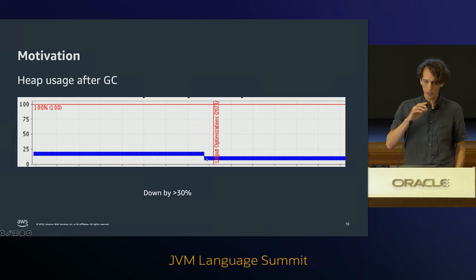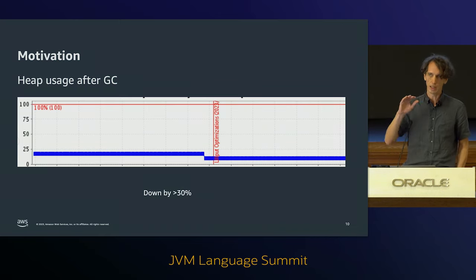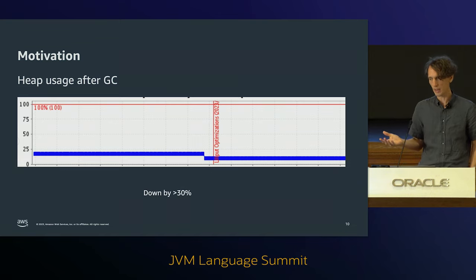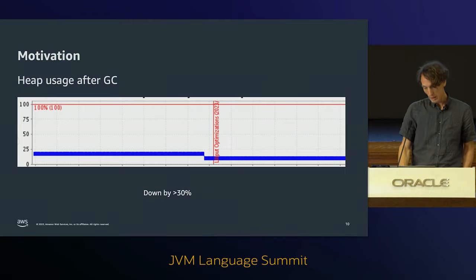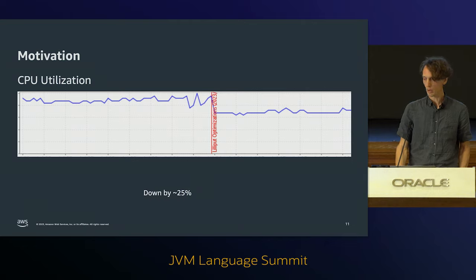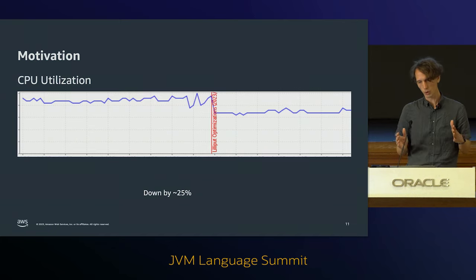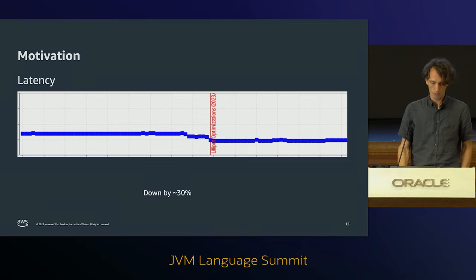This is heap usage after GC. It doesn't show the typical sawtooth pattern here, but this also has the effect that the slope of the sawtooth is a bit flatter than before, implying that the frequency of GCs is reduced - the interval between GCs is much longer - which means we're saving a lot of CPU utilization. CPU utilization dropped by about 25%, also caused by better locality. Having smaller object size means we can fit more objects into CPU caches, and this in turn improves latency for user requests by about 30%.